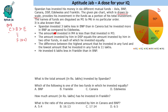BNP is greater than at least two different values. BNP cannot be the smaller sector, because if BNP were that sector it would only be greater than one value. So this next sector would be BNP. This is also visually looking more than the adjacent sector, so Canara and BNP have been identified.